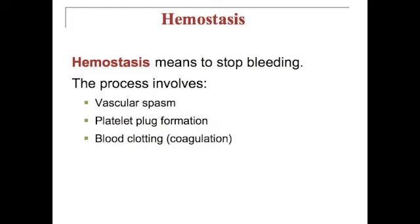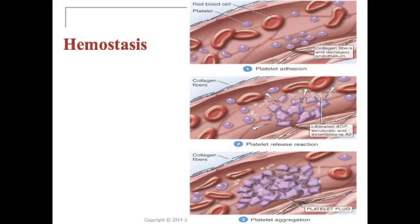Hemostasis means to stop bleeding. This process involves vascular spasm, platelet plug formation, and blood clotting or coagulation. Figure 19.9 on page 714 shows a step-by-step process of hemostasis. First, there is some collagen fiber and damaged endothelium, and then platelets begin to group in that area — this is called platelet adhesion. Second, the platelet release reaction occurs, with liberated ADP, serotonin, and thromboxane A2, and the platelets change shape. Third, platelet aggregation occurs, where the platelets form a plug to help prevent bleeding.